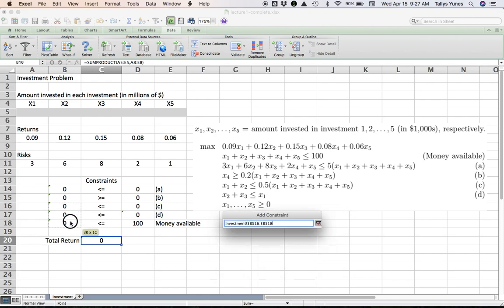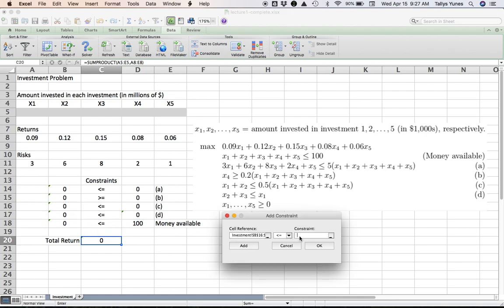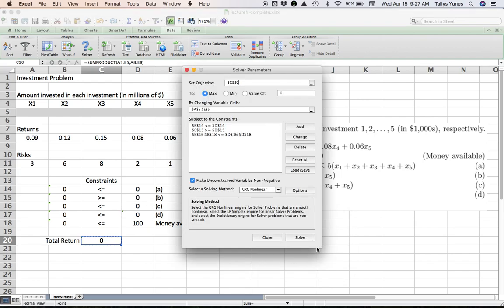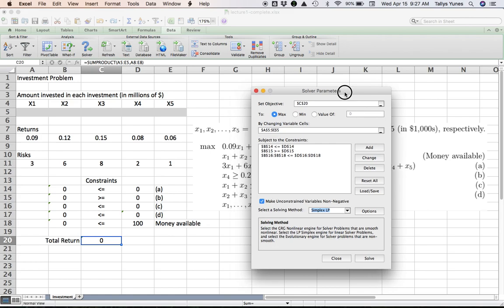And that will be the end of constraints. And our variables are non-negative, so click this box, and we change the solving method. It's not a non-linear problem. It's a linear problem, so the LP simplex linear programming, that's what we choose. And now we can click solve.